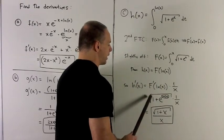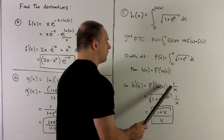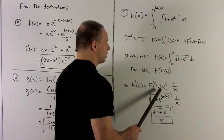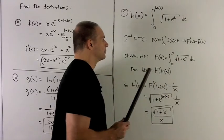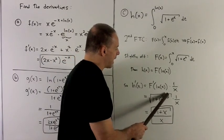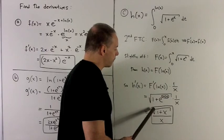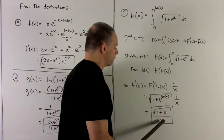So that's going to give me radical 1 plus e to the natural log of x times the derivative of the inside. So that's just going to be 1 over x. Now, notice we can collapse this inside piece here to x. So we're really just looking at radical 1 plus x over x.